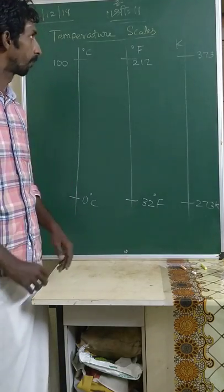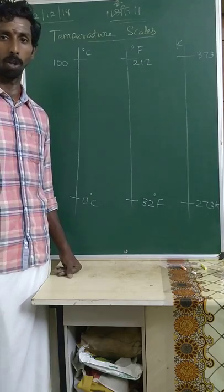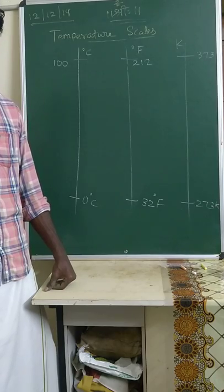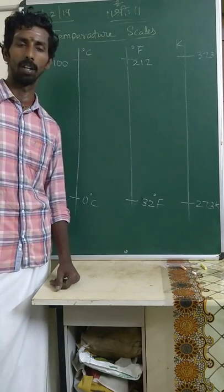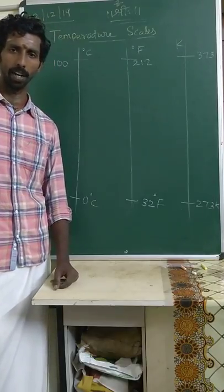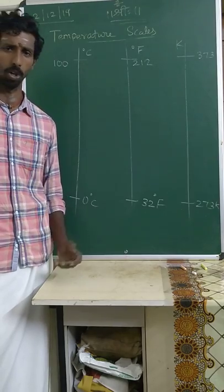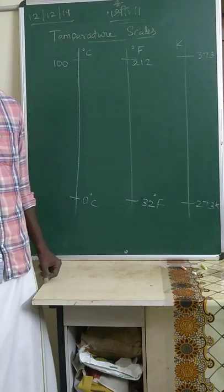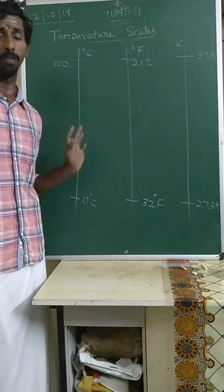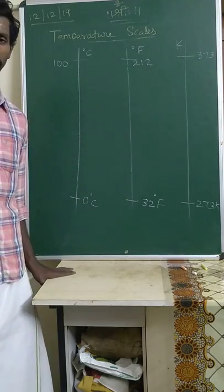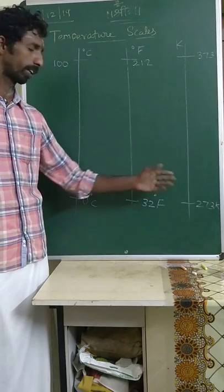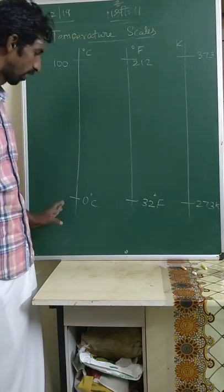Good evening students. Here we are going to discuss a new topic: temperature scales. We have seen different temperature scales in our daily life — centigrade, Fahrenheit, and Kelvin. Normally we use the Celsius or centigrade scale in our laboratory, the Fahrenheit scale for weather reports, and the Kelvin scale as the SI unit. Centigrade and Fahrenheit are not used as SI units, but Kelvin is.